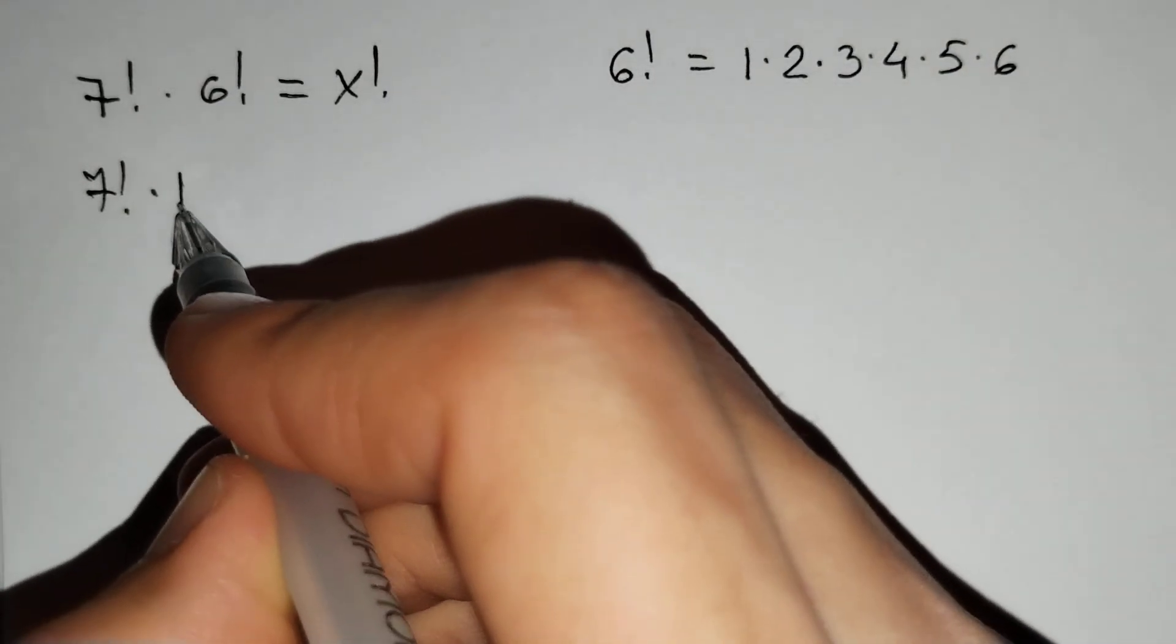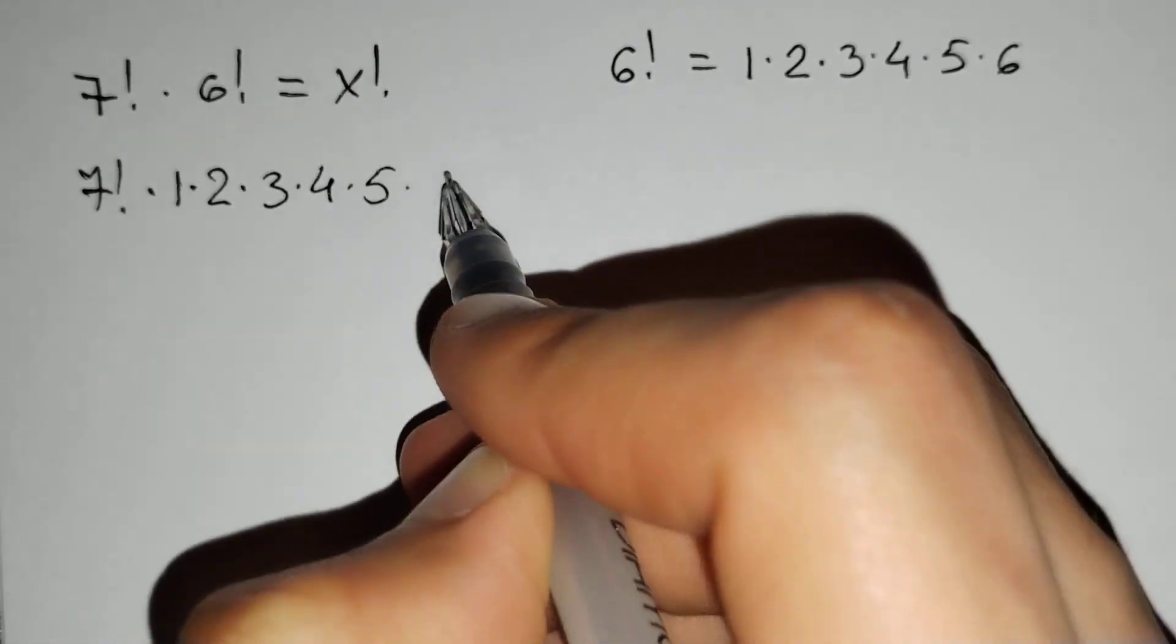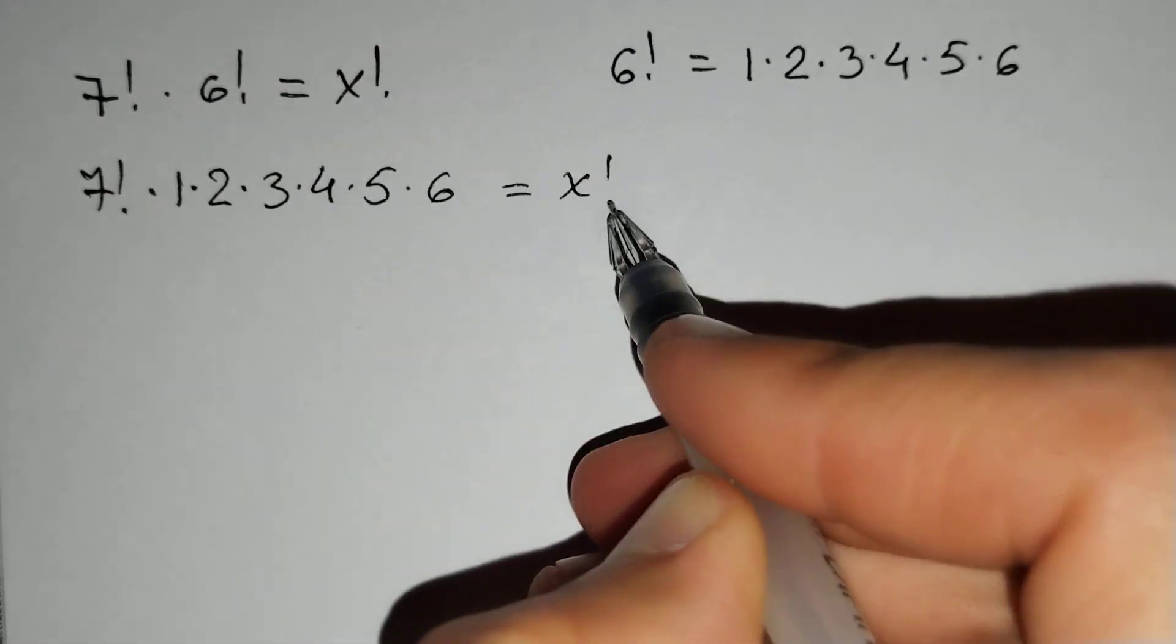And let's put it here: 1 times 2 times 3 times 4 times 5 times 6 equals x factorial.